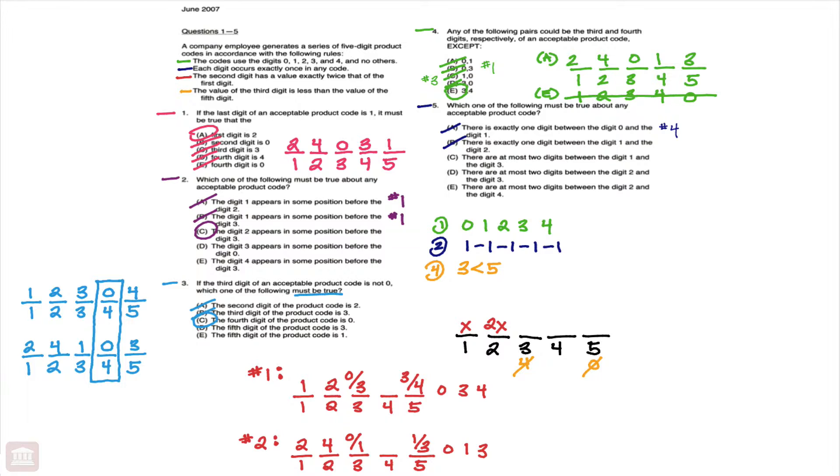C, there are at most two digits between the one and the three. Well, again, you notice from scenario one, we could actually have three digits in between the one and the three, right? Have one be first, three be fifth, and there would be one, two, three digits in between. So, C does not have to be true, and C would be eliminated.